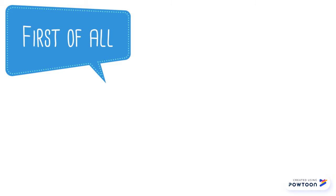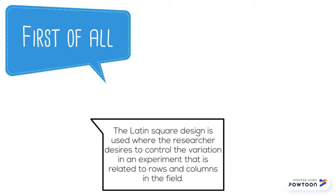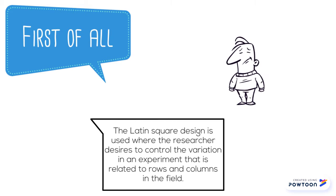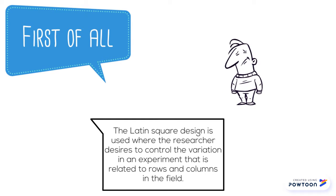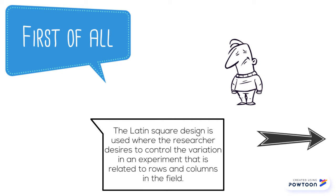First of all, Latin square design is used where the researcher decides to control variance in the experiment that is related to rows and columns in the field. I know reading the same thing in the book will not help you out, and this is why you are seeing this video.